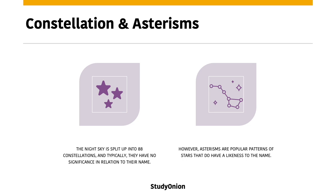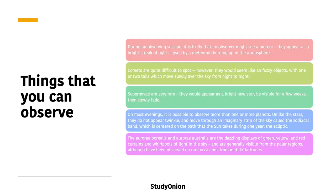So what else can you observe in a regular observing session? During an observation session it's quite likely that the observer might see a meteor. They look like a bright streak of light caused by a meteoroid burning up in the atmosphere.